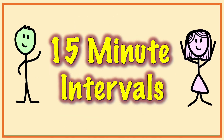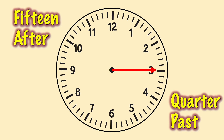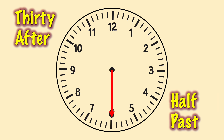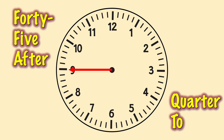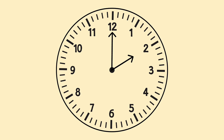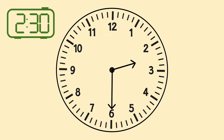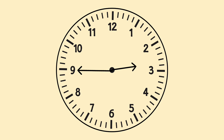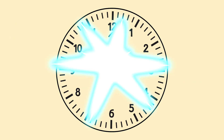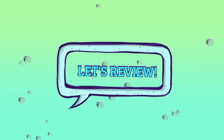When we tell time by 15 minute intervals, we divide the times into four equal parts: 15 after or quarter past; 30 minutes after or half past; 45 minutes after or quarter to the next hour; and the o'clock. Let's try some: 2 o'clock, 2:15 — quarter past two, 2:30 — half past two, 2:45 — quarter to three, 3 o'clock.